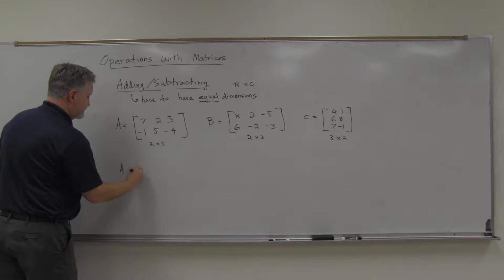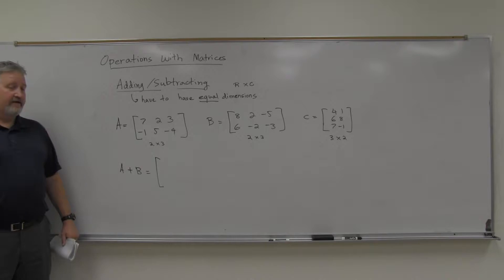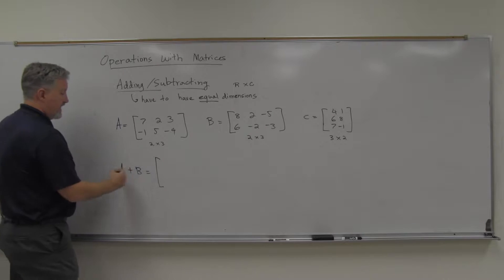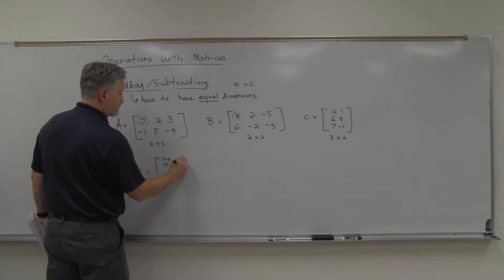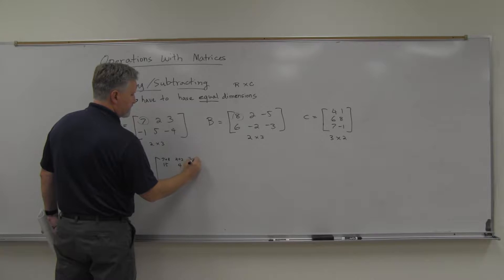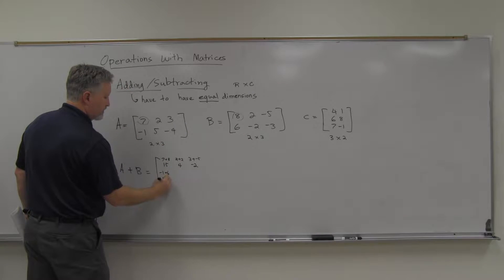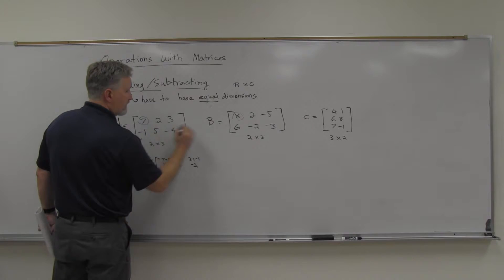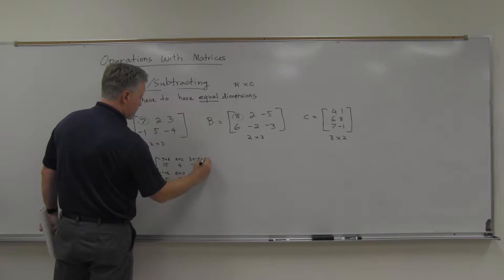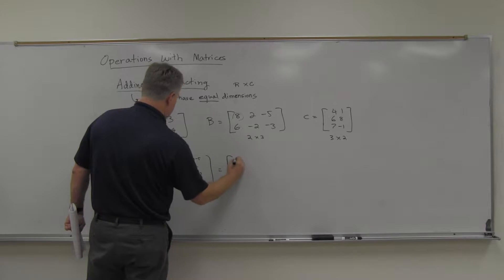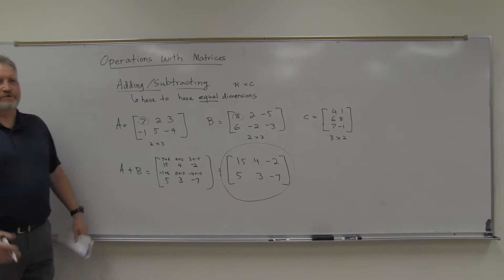How do we do that? Adding is fairly straightforward — you just add the corresponding entry. So A plus B: 7 plus 8 is 15, 2 plus 2 is 4, 3 plus negative 5 is negative 2. Then the second row: negative 1 plus 6 is 5, 5 plus negative 2 is 3, negative 4 plus negative 3 is negative 7. So A plus B gives us 15, 4, negative 2, 5, 3, negative 7.